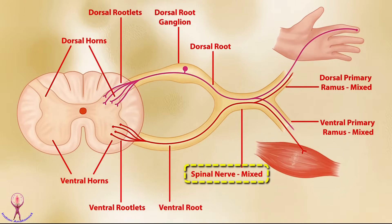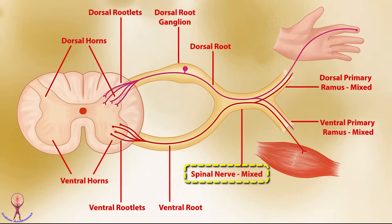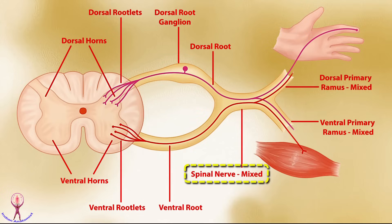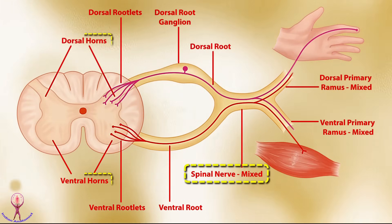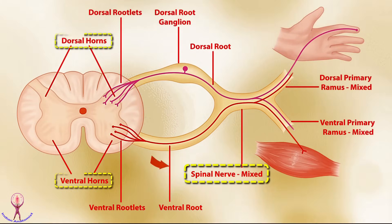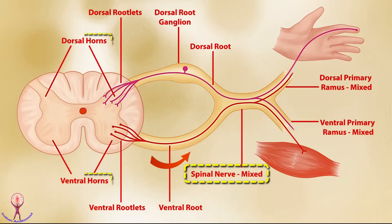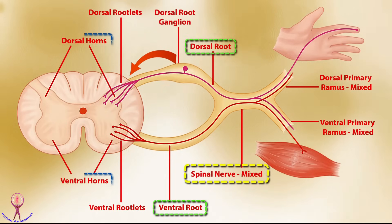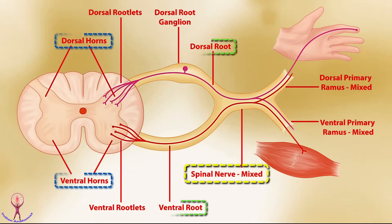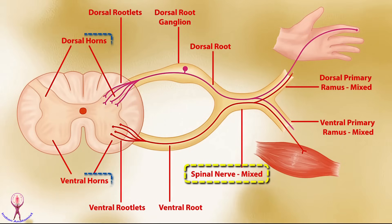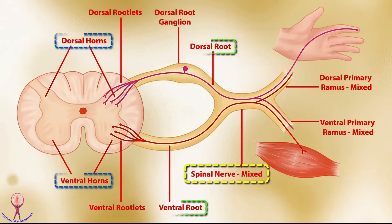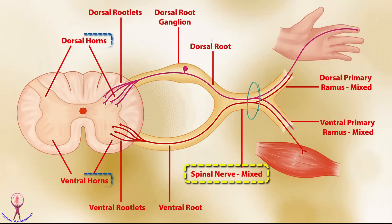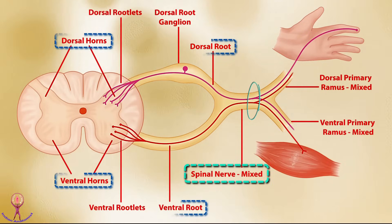This transverse section of the spinal cord shows the butterfly-shaped grey matter surrounded by white matter. Sensory neurons are in the dorsal or posterior grey horn, and motor neurons are in the ventral or anterior grey horn. The anterior grey horn neurons give the anterior root of the spinal nerve, and the posterior root reaches the posterior horn, because sensory information always comes from the periphery to the spinal cord. So the anterior root is motor and the posterior root is sensory. These later form the typical spinal nerve at the intervertebral foramen. Every spinal nerve is of a mixed variety.